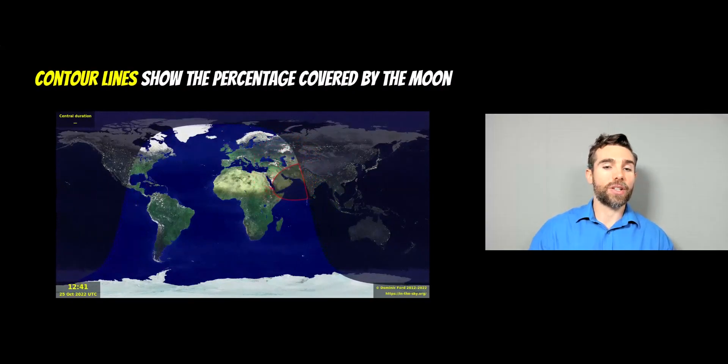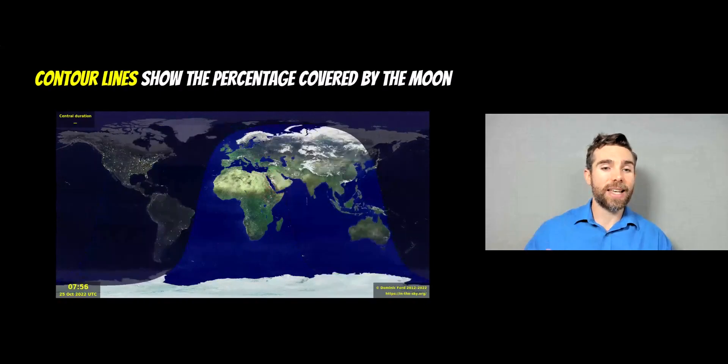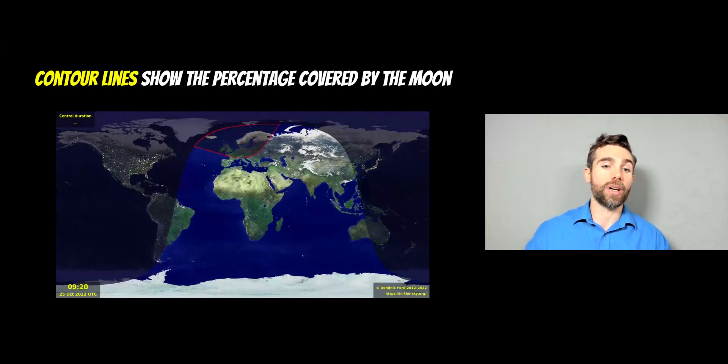It's going to be a partial solar eclipse, not a full solar eclipse. The contour lines here show the percentage of the sun that's actually going to get obstructed by the moon when the moon passes in between the Earth and the sun.